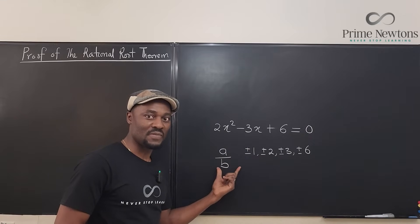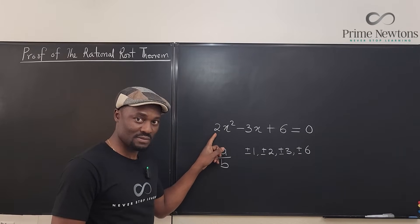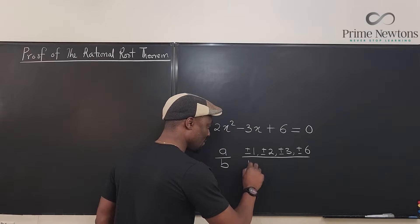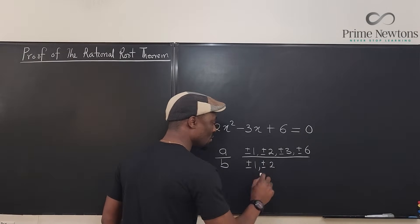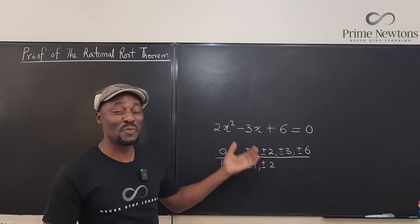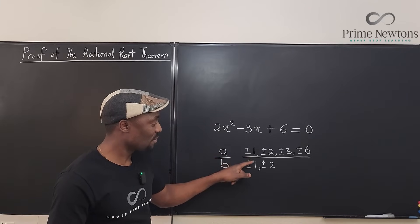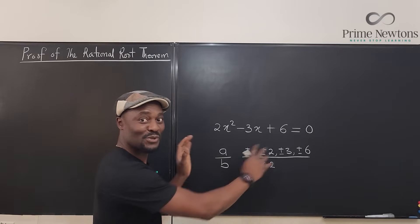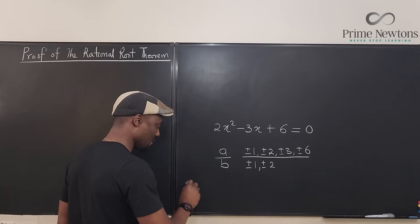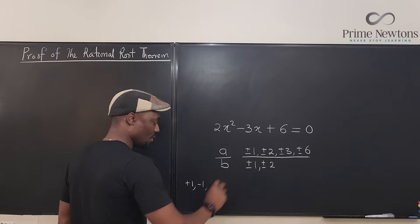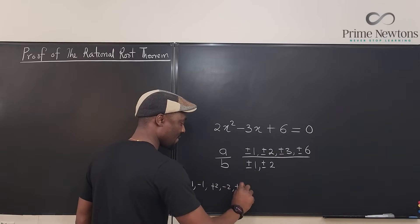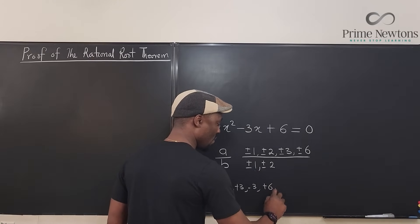If A is not one of these numbers, it cannot be a rational root of this equation. And then the bottom — the denominator — has to be a number that divides 2, meaning the bottom must be plus or minus 1 or plus or minus 2. So now, how many combinations can you have? It can be 1 over 1 — let's see how many rational roots we can generate. Keeping everything over denominator 1, we get plus 1, minus 1, plus 2, minus 2, plus 3, minus 3, plus 6, or minus 6.